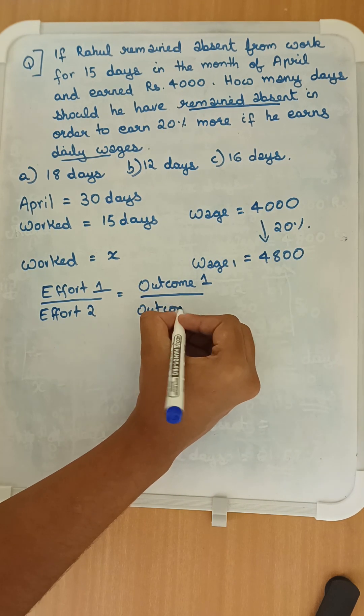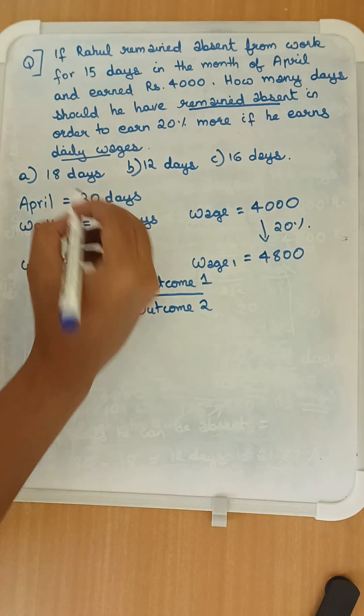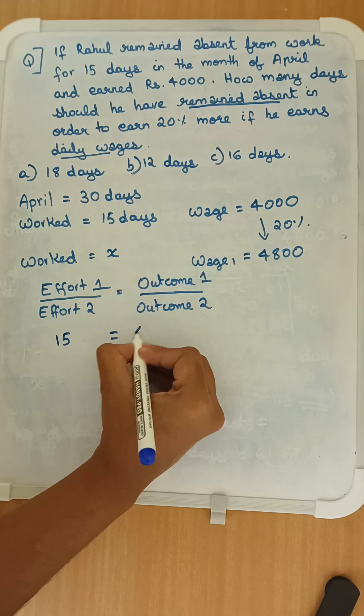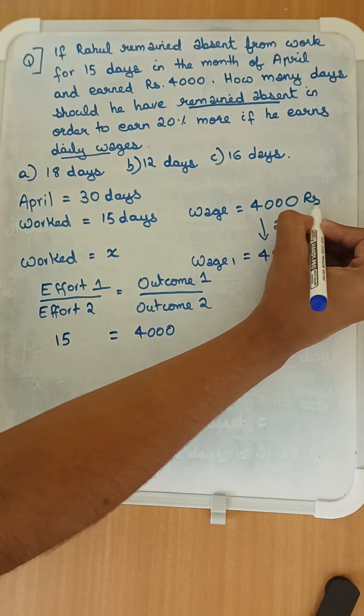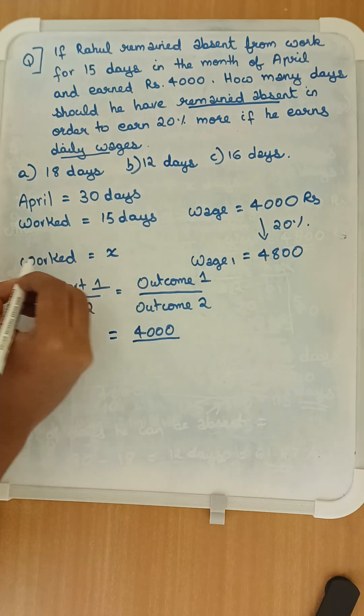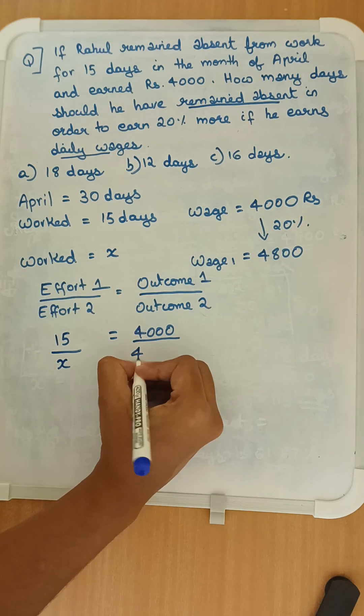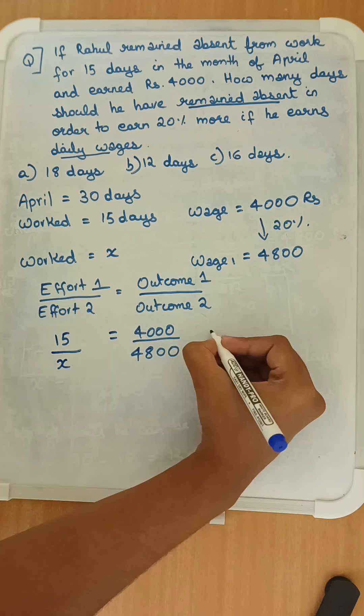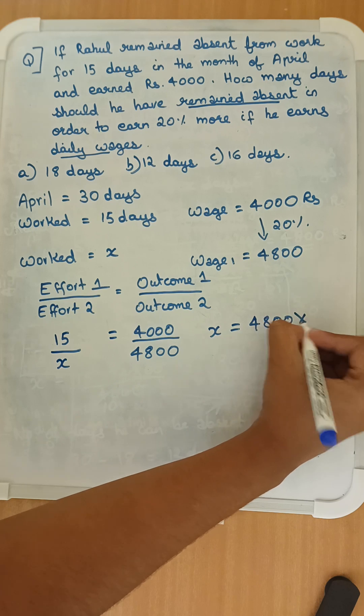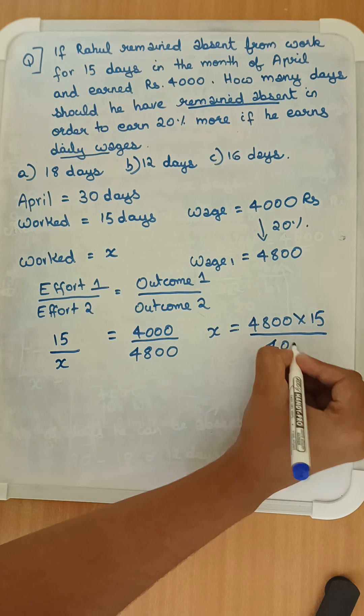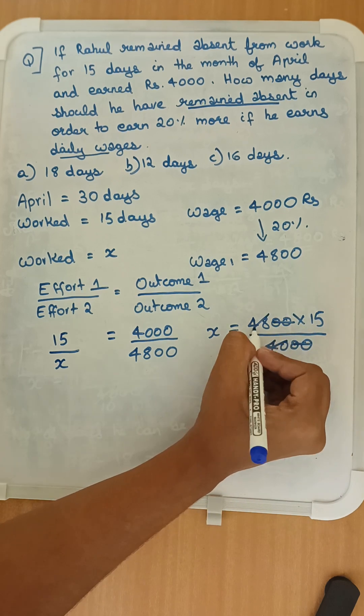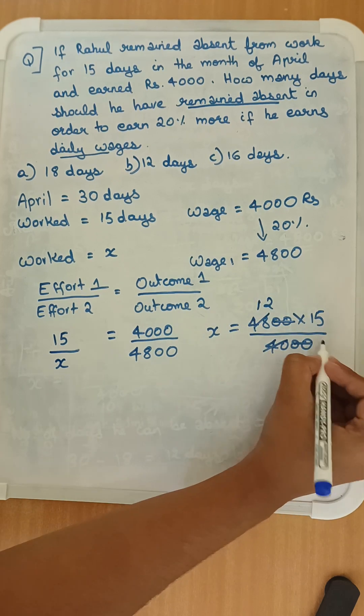So in this case, the first effort would be working for 15 days and the outcome would be he earned 4,000 Rs. Effort 2 is unknown, like how many days he worked is unknown to get a wage of 4,800. So cross multiplying, x would be equal to 4,800 into 15 divided by 4,000.